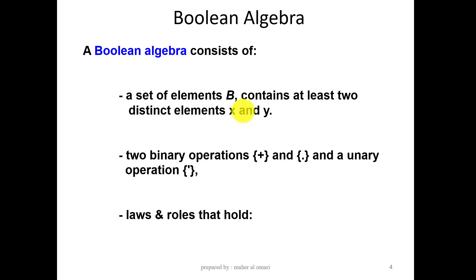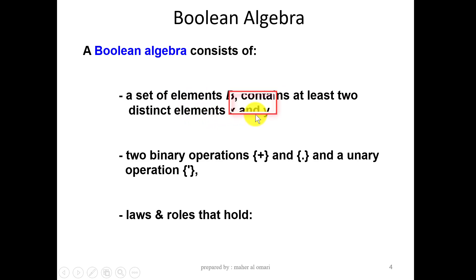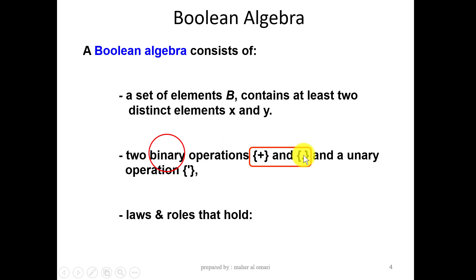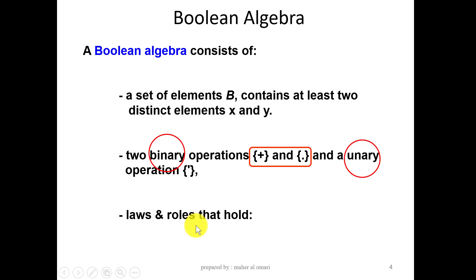Boolean Algebra consists of a set of elements B, which contains at least two distinct elements X and Y. It consists of two binary operators — the OR and the AND — and a unary operator, which is the complement, plus the laws and rules that hold.